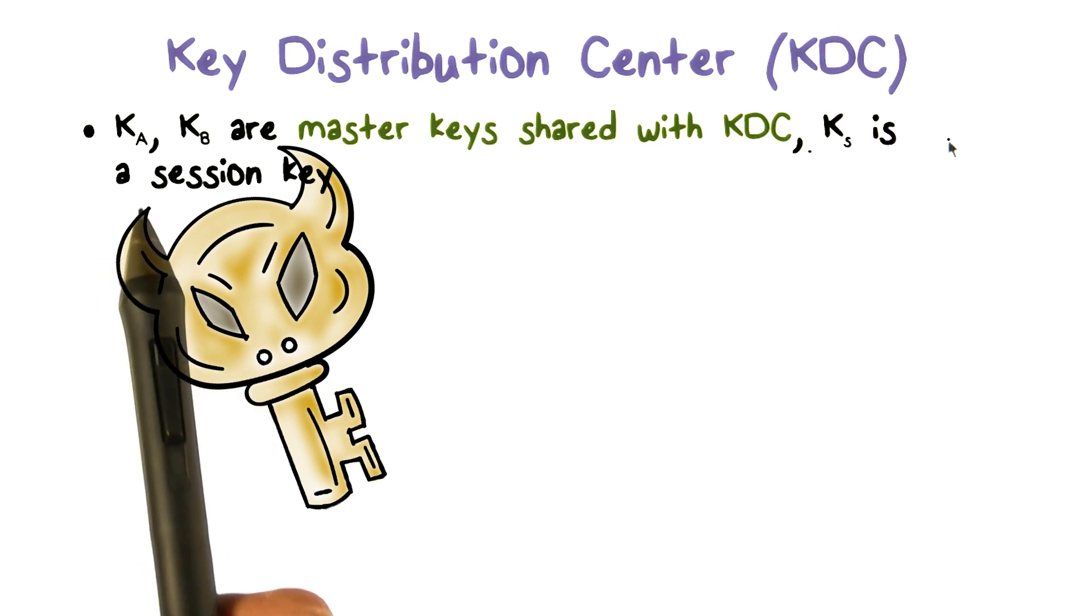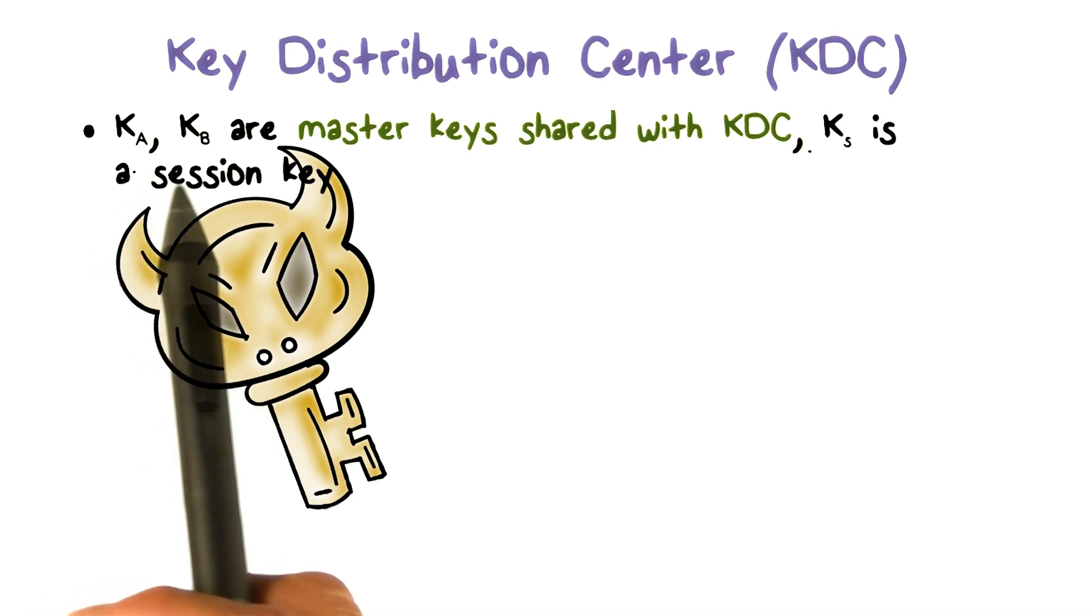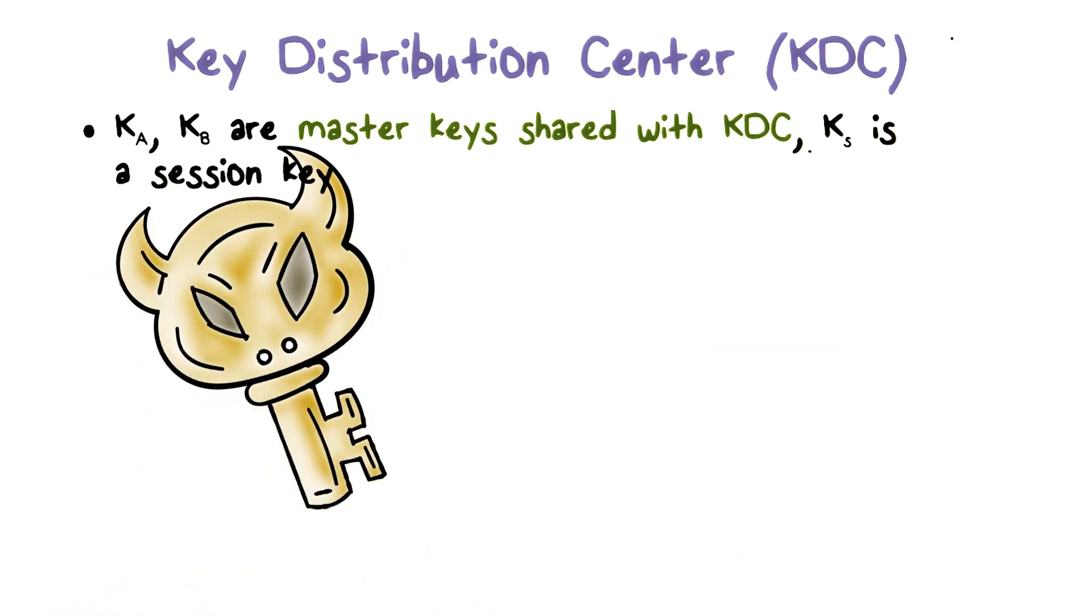For example, Alice has KA that is shared with KDC, and Bob has KB that is shared with KDC.